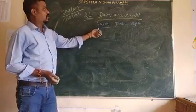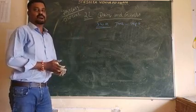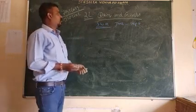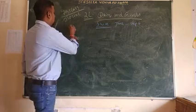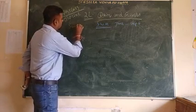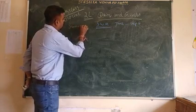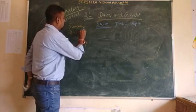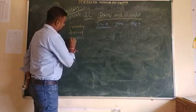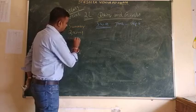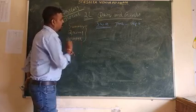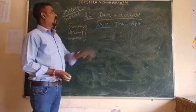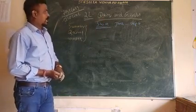Generally in our country there are three seasons. How many seasons are there? Three seasons. First one is summer season, second one is rainy season, and third one is winter season. These are the main three seasons in our country. And we are discussing about the rain.